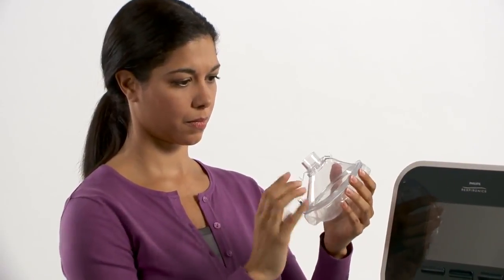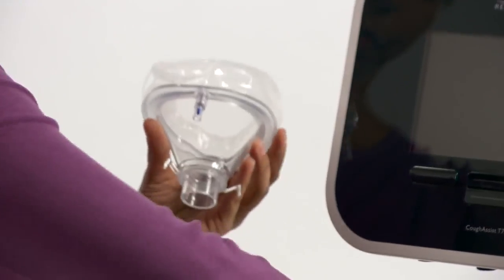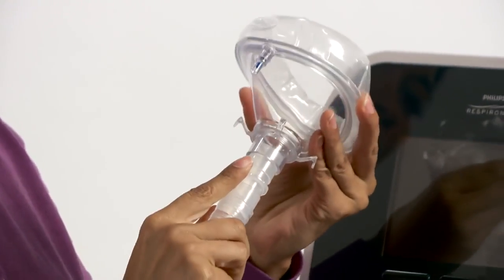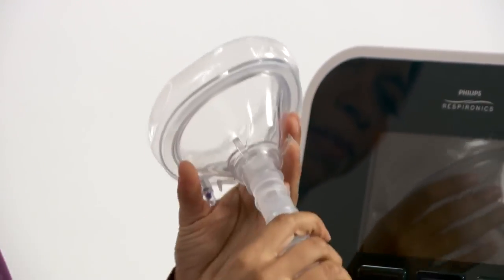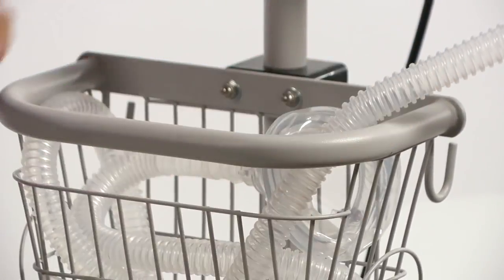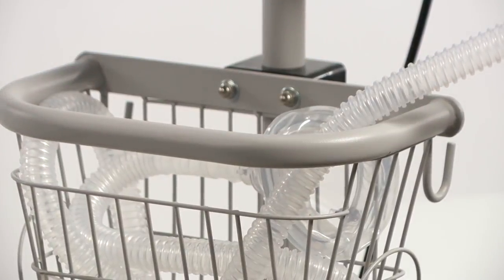If the patient will be using a face mask or mouthpiece, attach it to the circuit tubing. If the patient has a tracheostomy tube, place a trach adapter on the circuit tubing. If the trach has a cuffed tube, inflate the cuff.